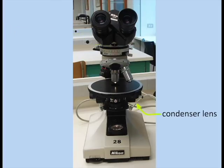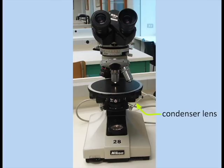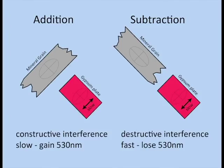The condenser lens produces convergent light, which focuses better on one part of the specimen. The gypsum plate is used to identify the vibration direction. Under cross-polars, the gypsum plate shows first-order pink interference colors. With the gypsum plate inserted, either addition of retardation or subtraction of retardation occurs.